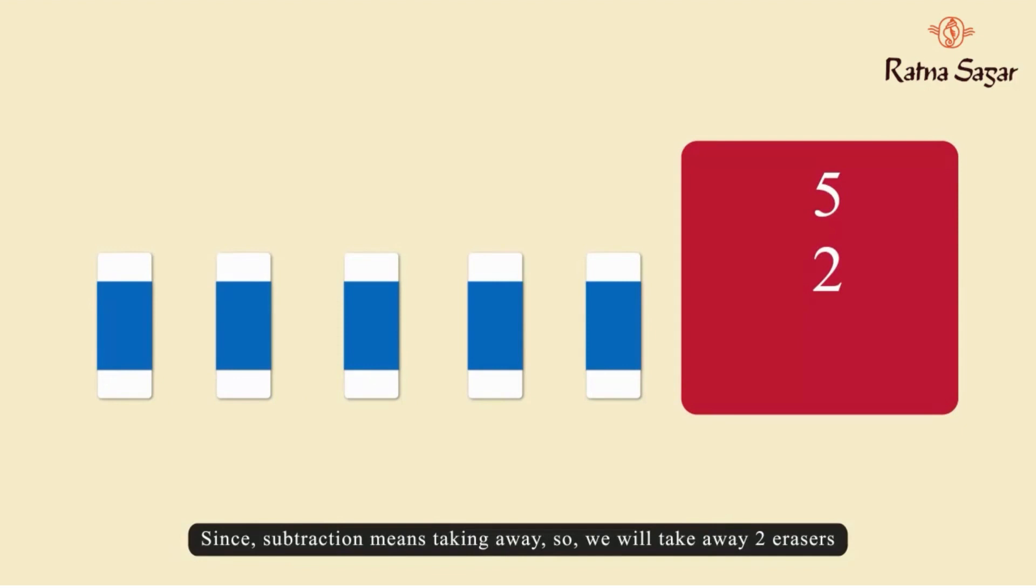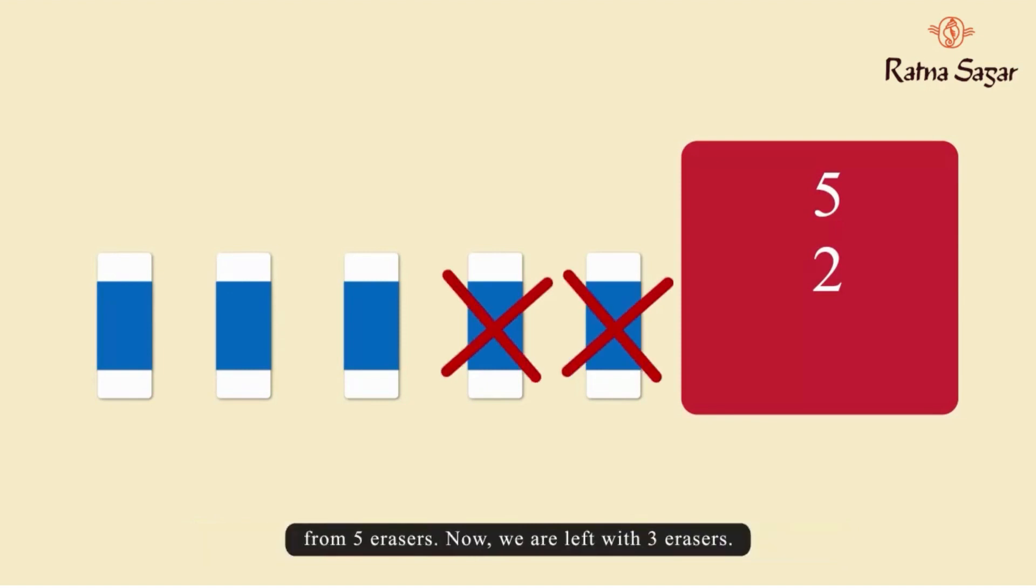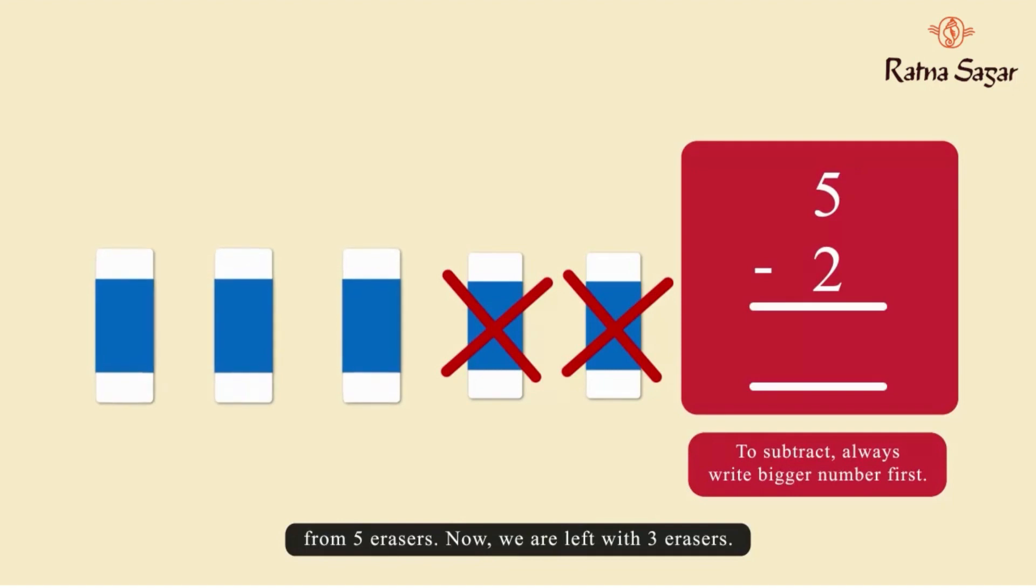Since subtraction means taking away, so we will take away two erasers from five erasers. Now we are left with three erasers. Let us consider another example.